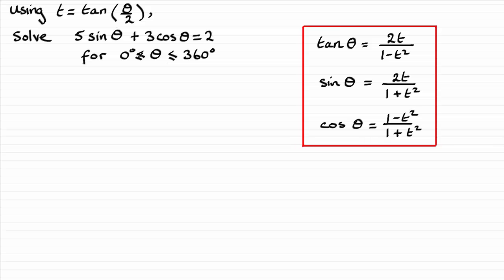So we've got 5 sin θ plus 3 cos θ equals 2, and we've got to give values of theta greater than or equal to 0 degrees but less than or equal to 360 degrees. So all we need to do is substitute for sine theta and cosine theta in terms of t into our equation here.